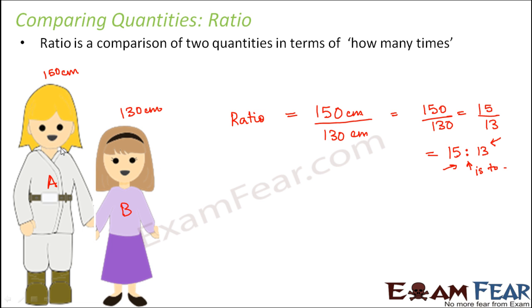Similarly, if we say that height of A is 2 times the height of B, then what would be the ratio? So if we say that height of A is equal to twice of height of B, if this is a given condition, in that case, what would be the ratio of height of A to height of B?